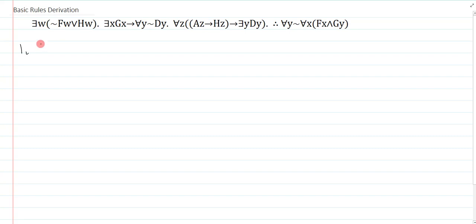Line one, show. When I write my show line, I notice immediately that the main operator is a universal. The first thing I need to do is show line breakdown and make sure I do it correctly. To show this, what I really need to do is show an instantiation of it, and we always instantiate it to the exact same variable letter.